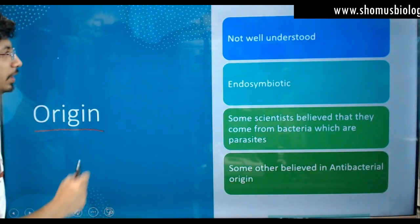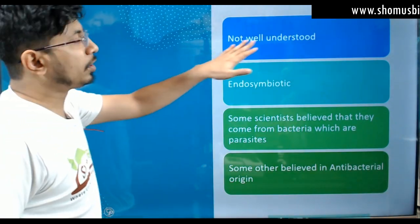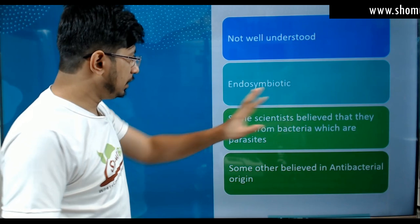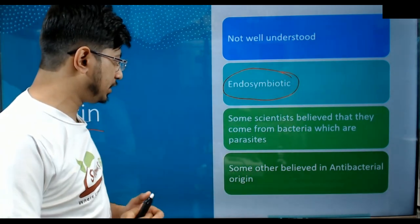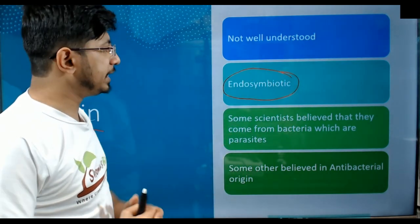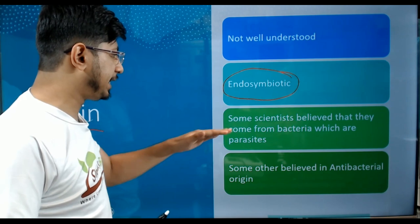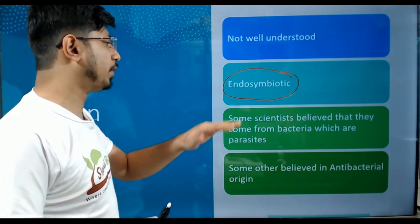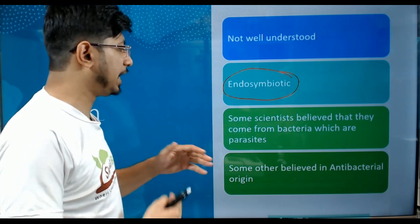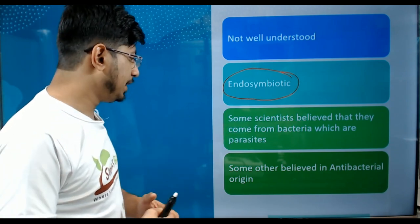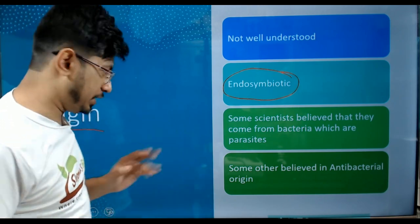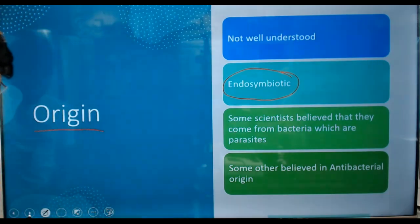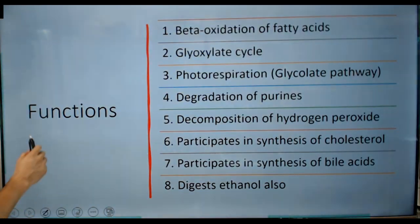The origin of paroxysome is not well understood, but we know it can have an endosymbiotic relationship. Some scientists believe they come from bacteria which are parasites, and some others believe in antibacterial origin, but it's not clear yet.